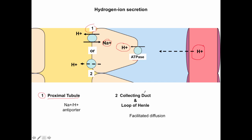At the collecting duct and loop of Henle, hydrogen ions cross the luminal membrane through a facilitated diffusion transporter — just crossing through facilitated diffusion. That's the mechanism for hydrogen ion secretion.